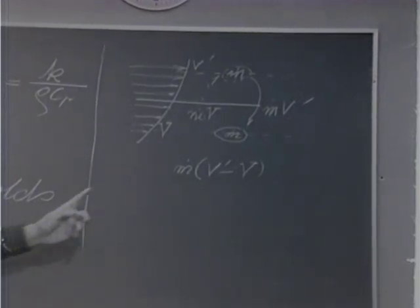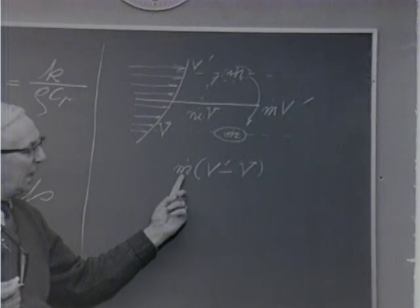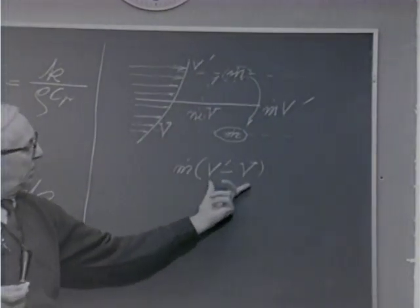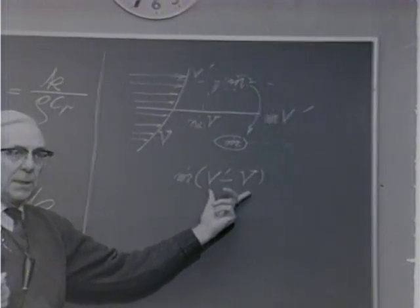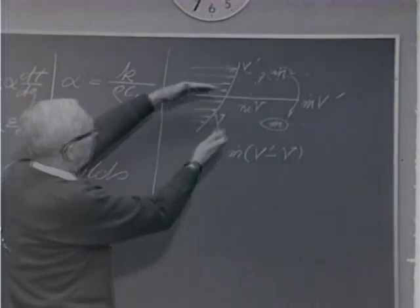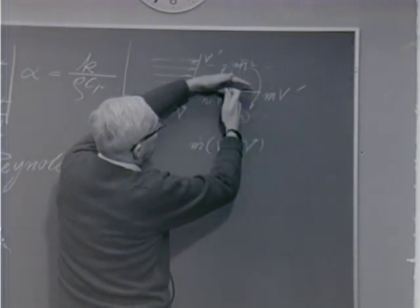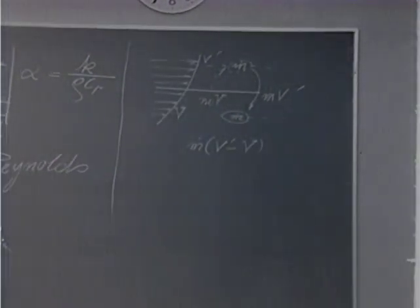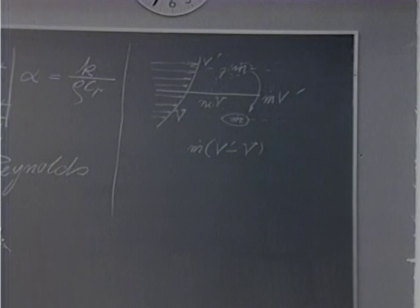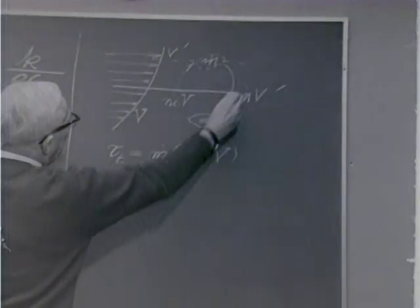This net momentum transport per unit time through a unit cross-sectional area is equivalent to a force per unit area, i.e., a stress. Since it acts within the plane, it is a shear stress. So this expression, in our simplified picture of turbulent movement, gives us the turbulent shear stress acting in this plane.